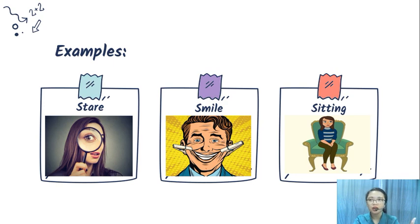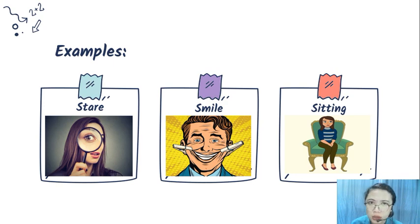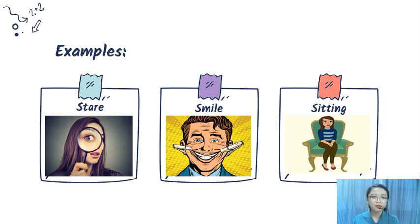Here's an example — a stare. Different kinds of stares can be interpreted in different ways. And a smile — when you smile, it means you are okay, you agree with some idea, and so on.